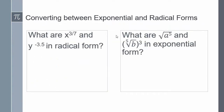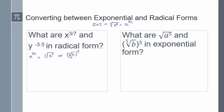Here we're converting between exponential and radical forms. Using oi: I want to write x to the power of 3/7 in radical form. My exponent is my numerator and the index for the radical is my denominator. So x to the power of 3/7 can be written as the 7th root of x cubed, or the 7th root of x, the whole thing raised to the power of 3.